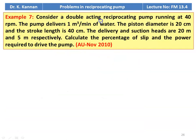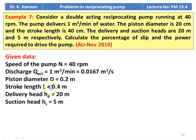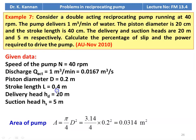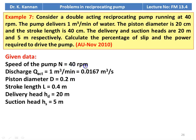Example number 7: Consider a double acting reciprocating pump running at 40 RPM. The pump delivers 1 meter cube per minute of water. The piston diameter is 20 centimeter and the stroke length is 40 centimeter. The delivery and suction heads are 20 meter and 5 meter respectively. Calculate the percentage of slip and the power required to drive the pump. Data given: speed N = 40 RPM, discharge = 1 m³/min = 0.0167 m³/s, piston diameter 0.2 meter, stroke length 0.4 meter, delivery head 20 meter, suction head 5 meter.